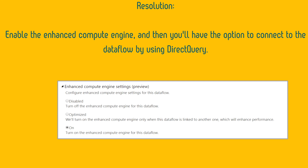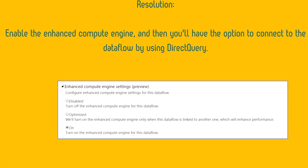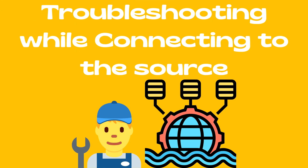Now we move to the third and last part: troubleshooting while connecting to the source. I'll explain certain scenarios where you can encounter error messages or difficulty when trying to connect to the data source. When you create a data flow, sometimes you get an error connecting to the data source caused by the data gateway, credentials, or other reasons. I'll cover the most common connection errors and their resolutions.